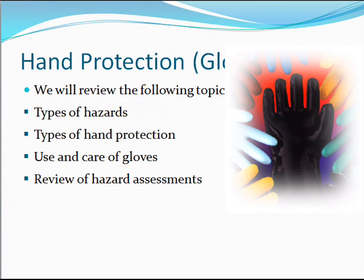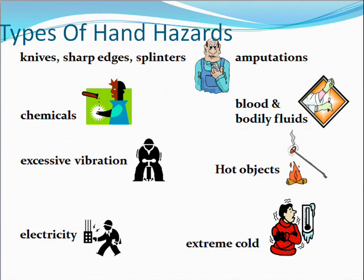Hand protection — gloves. We will review the following topics: types of hazards, types of hand protection, use and care of gloves, and review of hazard assessments. Types of hand hazards include knives, sharp edges, and splinters; amputations; chemicals; blood and bodily fluids; excessive vibration; hot objects; electricity; and extreme cold. The nature of these hazards and the operation to be performed should guide your selection of gloves. The variety of potential hand injuries makes choosing the appropriate glove more difficult than selecting any other protective equipment. Take care when choosing gloves designed for your particular workplace circumstances; glove manufacturers can provide valuable assistance.